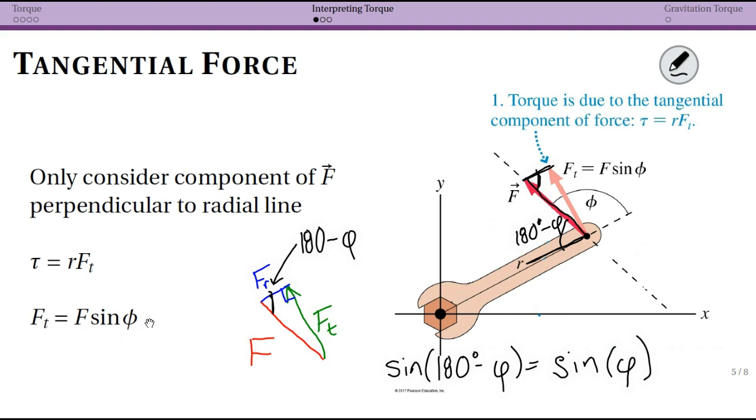We get that it's F sine phi, and think about the fact that in this case we're just throwing away the radial component, and that makes sense because we know if I just pull on the wrench or push directly on the wrench towards the axis, that doesn't make it turn. Only the component of your force that is perpendicular is responsible for turning.